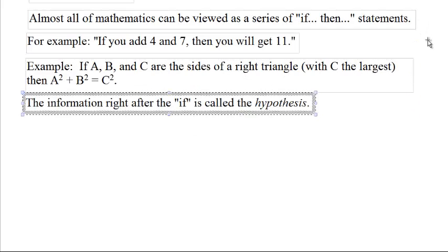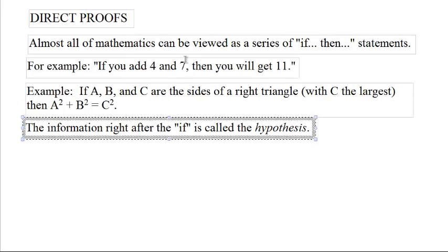Now, the information right after the if is called the hypothesis. If you add 4 and 7 is the hypothesis. If a, b, and c are the sides of a right triangle, with c the largest, that's a hypothesis.